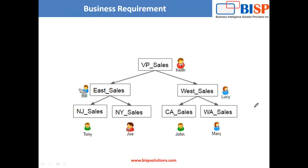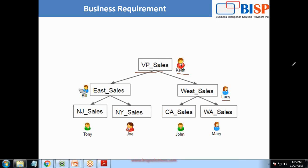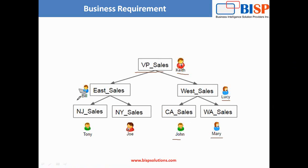So first let me tell you the business requirement. Let's suppose we have a record and my requirement is: Keith is working as a VP of Sales. Under Keith we have two more roles - East Sales and West Sales. Bill's role is East Sales and the West Sales role has been assigned to Lucy. Under Lucy there are two more subordinates: John and Mary. Under Bill there are two subordinates: Tony and Joy.